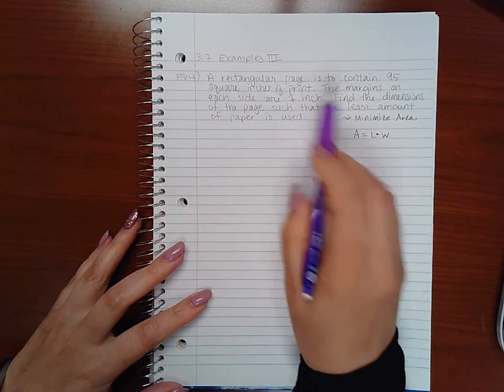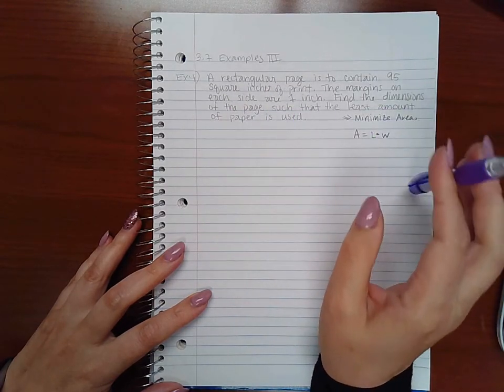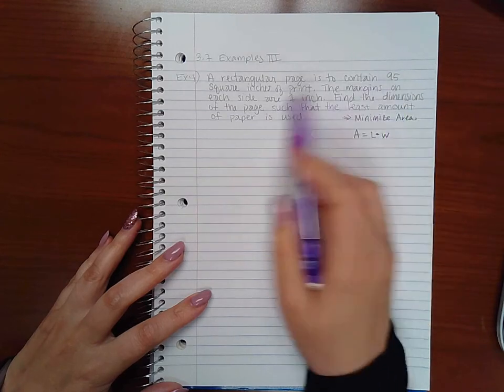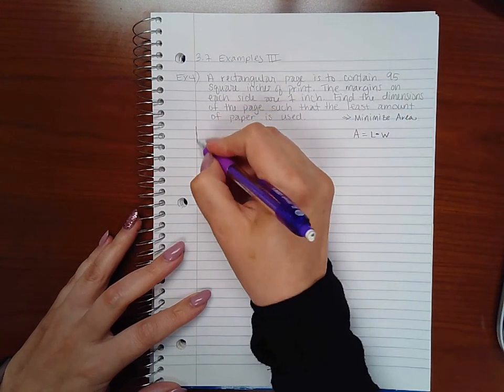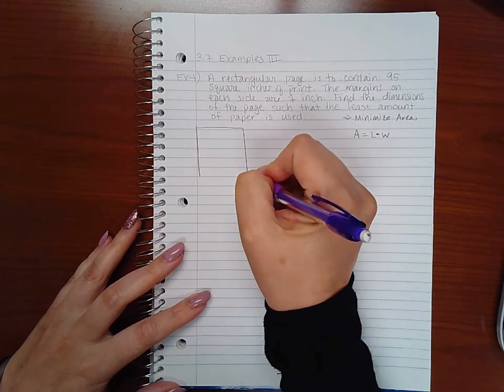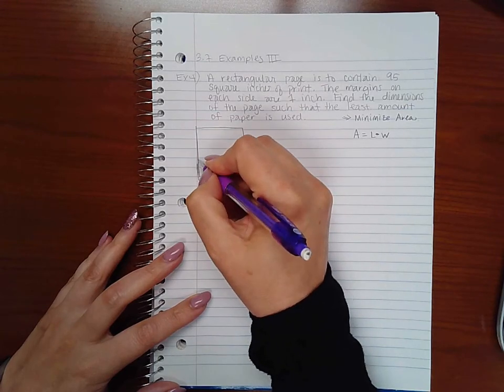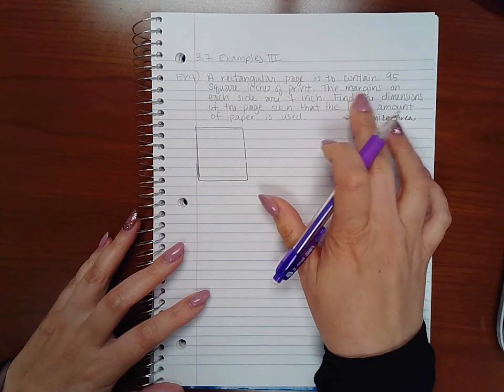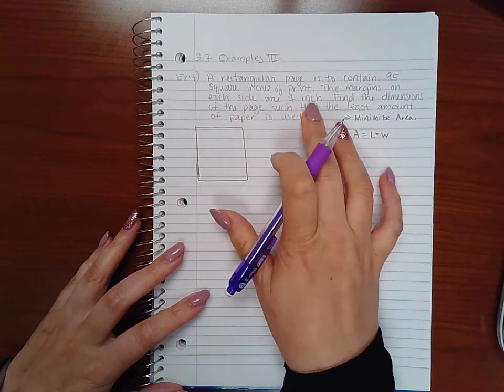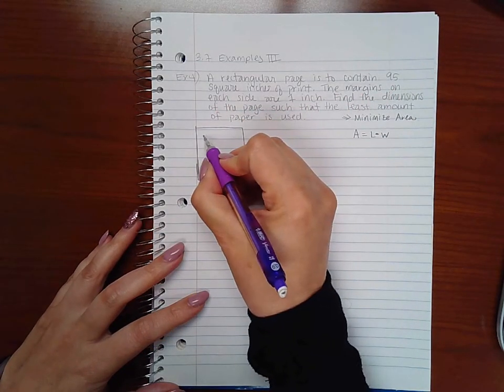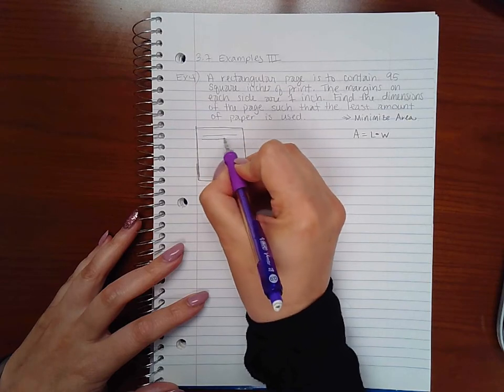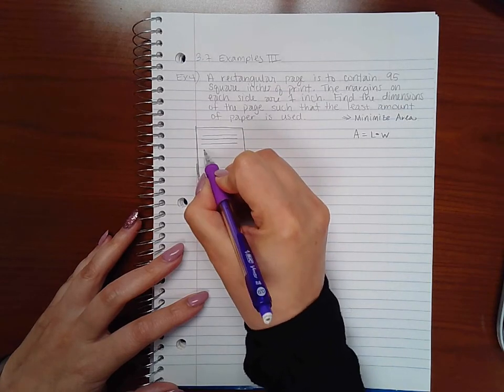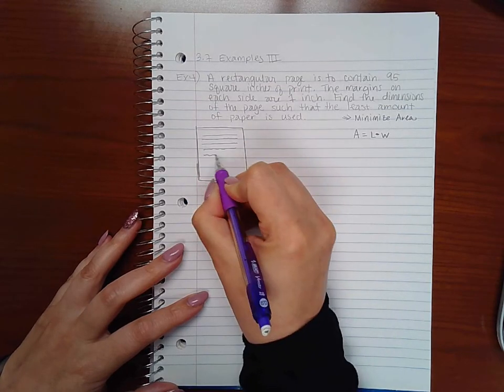Now they did give me some information here. They told me that the page is going to have 95 square inches of print. Before I even talk about that, let's continue with the next sentence. It says the margins on each side are one inch.